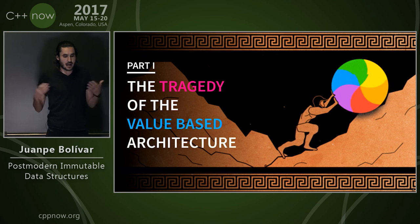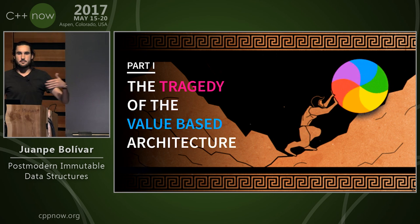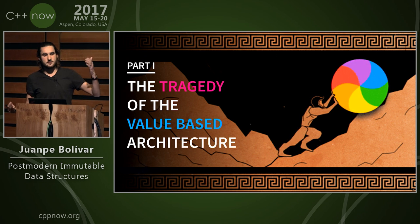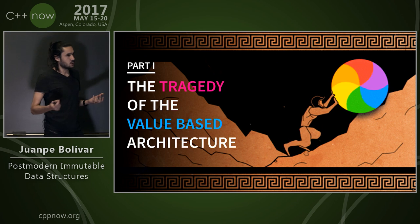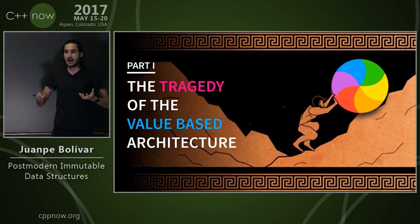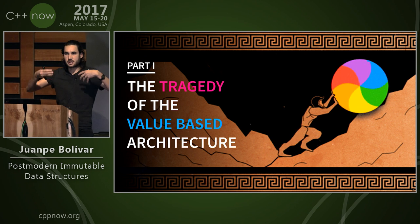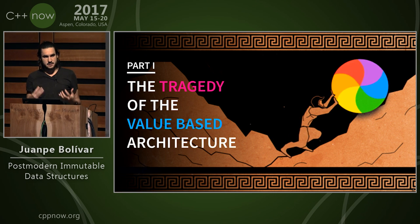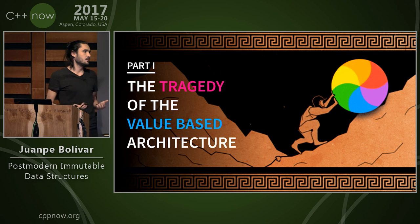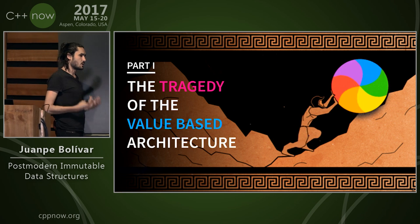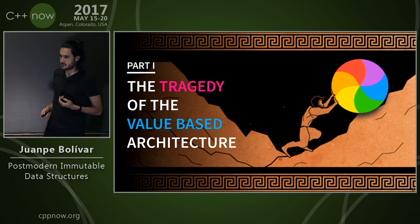A lot of the standard library is value-based. We now know also how to do open-world polymorphism with value semantics. But thinking in architectural terms as values is hard, and I've seen teams fail when trying to do so. This is what I call the tragedy of the value-based architecture.